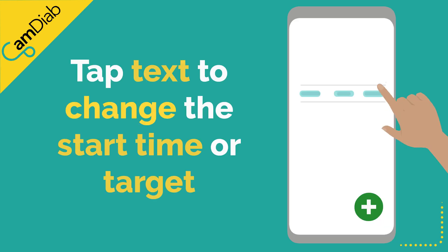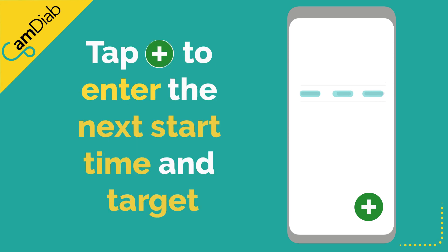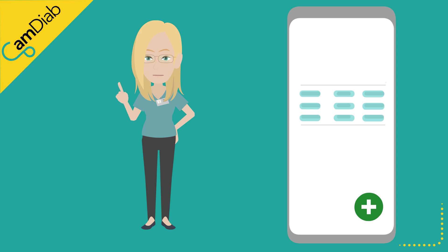You can tap on the blue text if necessary to change the desired start time or glucose target value. If more than one personal glucose target needs to be programmed across the 24 hours, please tap on the green plus to enter the next start time and target value. No end time needs to be programmed — the last time block will automatically run until midnight.